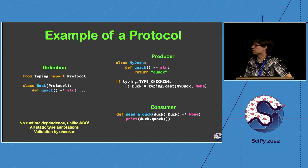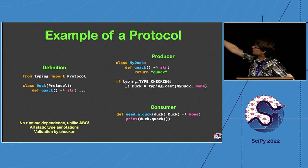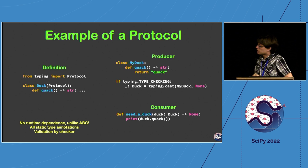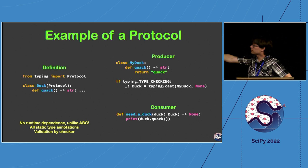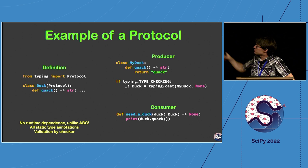A protocol is a formalized version of duck typing. You define a Duck protocol that simply requires a quack method. For a producer, you implement that method and mypy will pass the type check. For a consumer, you declare it takes a Duck and your type checker will flag anything outside that protocol. Unlike an ABC (abstract base class), this is entirely static with no runtime dependencies.